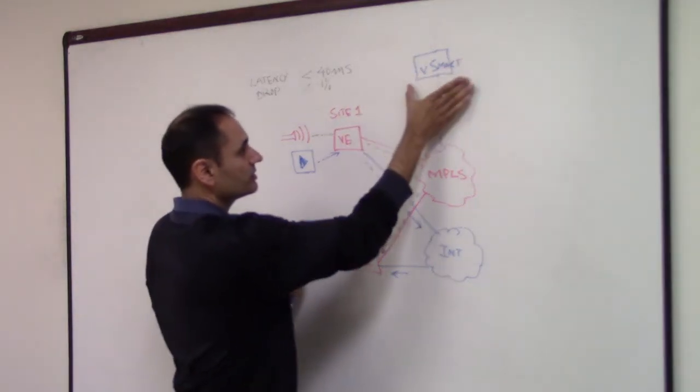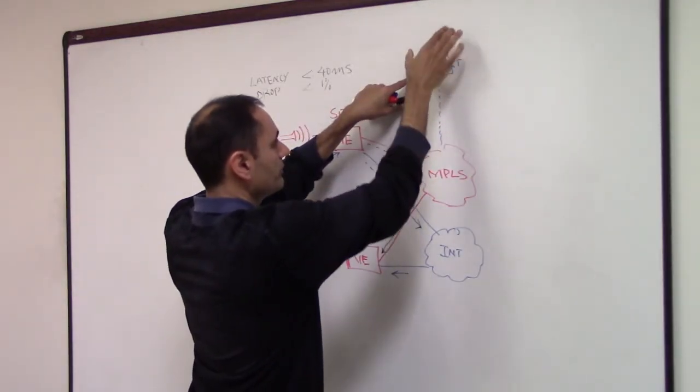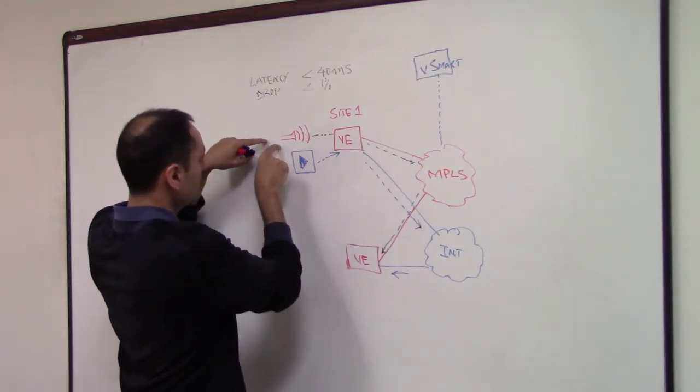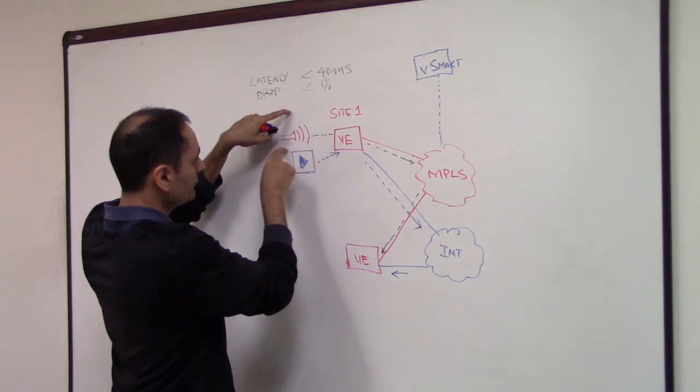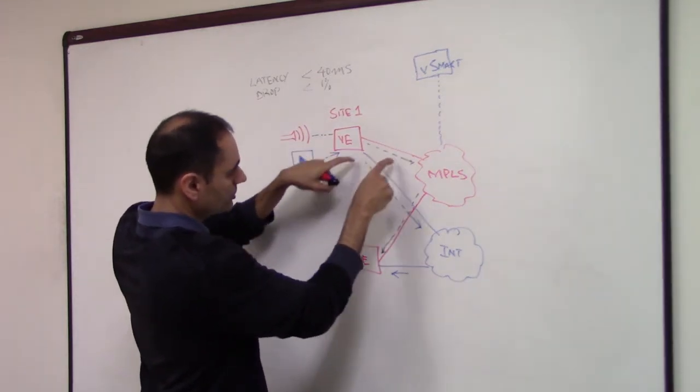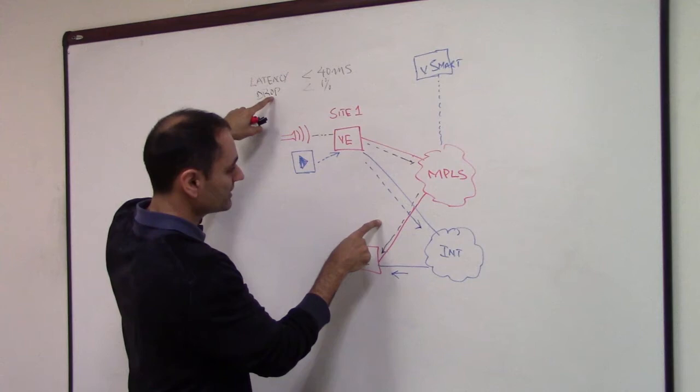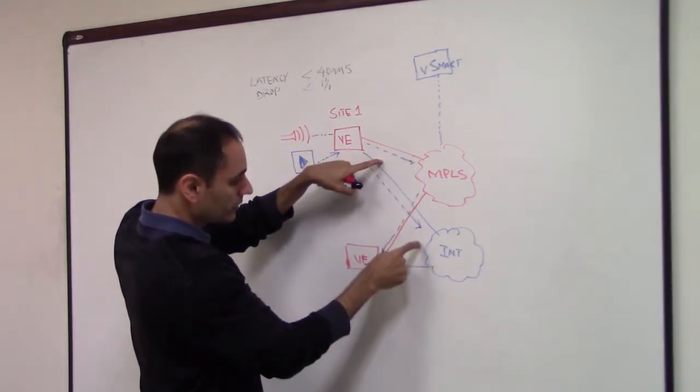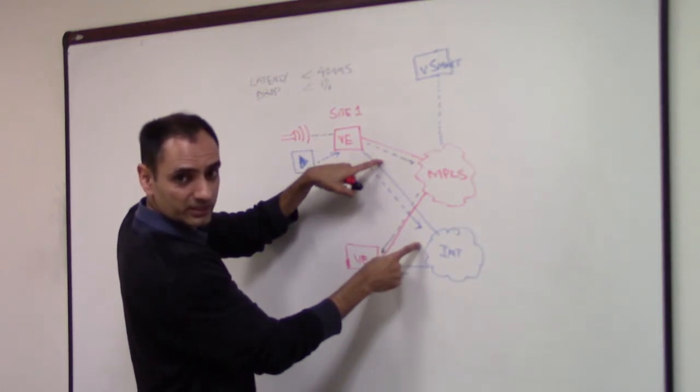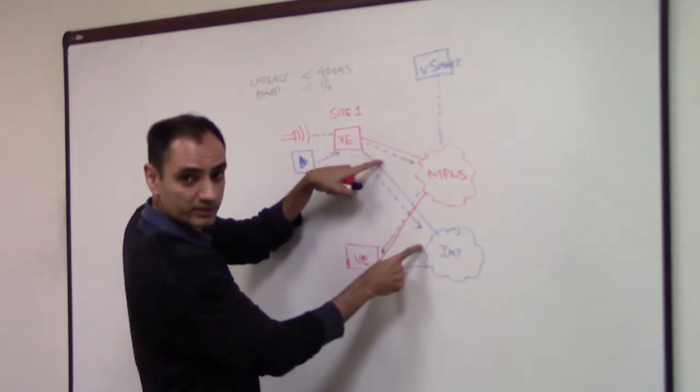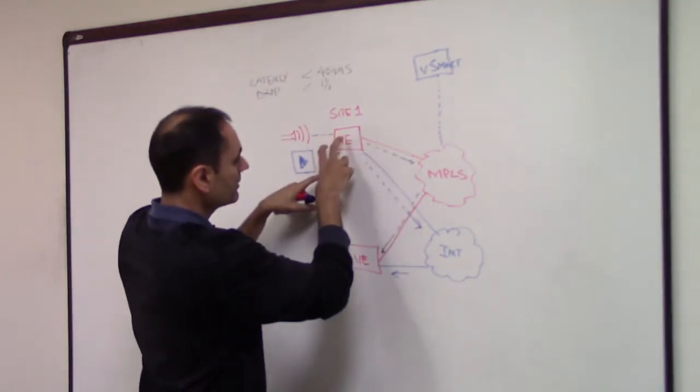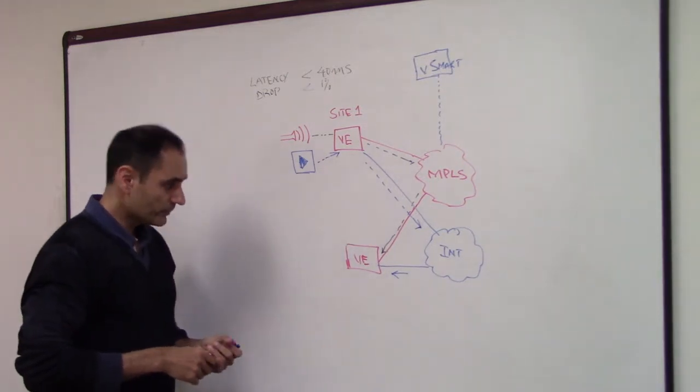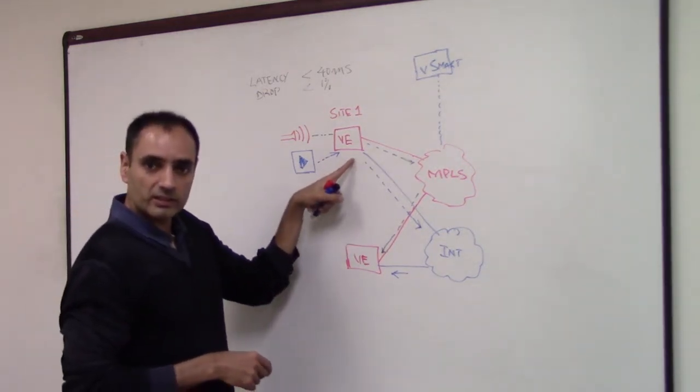So you have a central policy which is applied on the controller. The controller makes sure that traffic, in this case the voice traffic, stays on the transport which meets the given SLA at a given time. It could be MPLS in most cases or it could be some other transport. So whichever meets the SLA, it routes or steers that application traffic onto that transport.